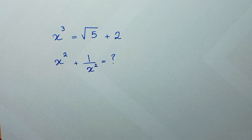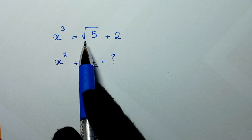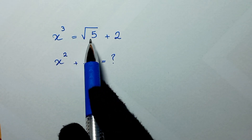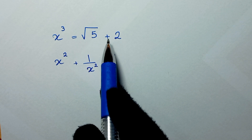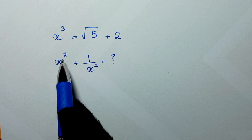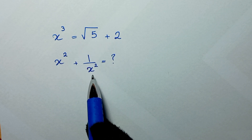Hello my friends, you're welcome to solve this math problem: x cubed is equal to square root of 5 plus 2, and we need to find the value of x squared plus 1 over x squared.